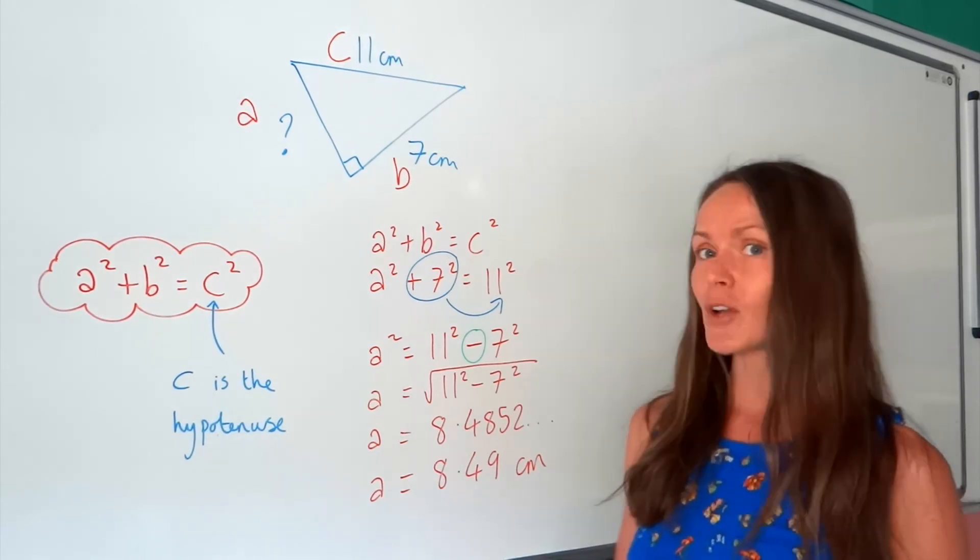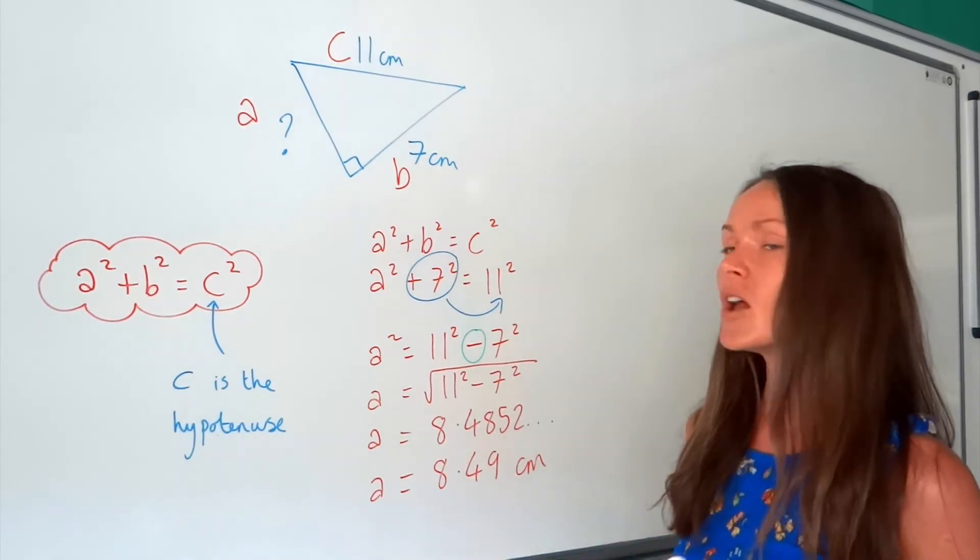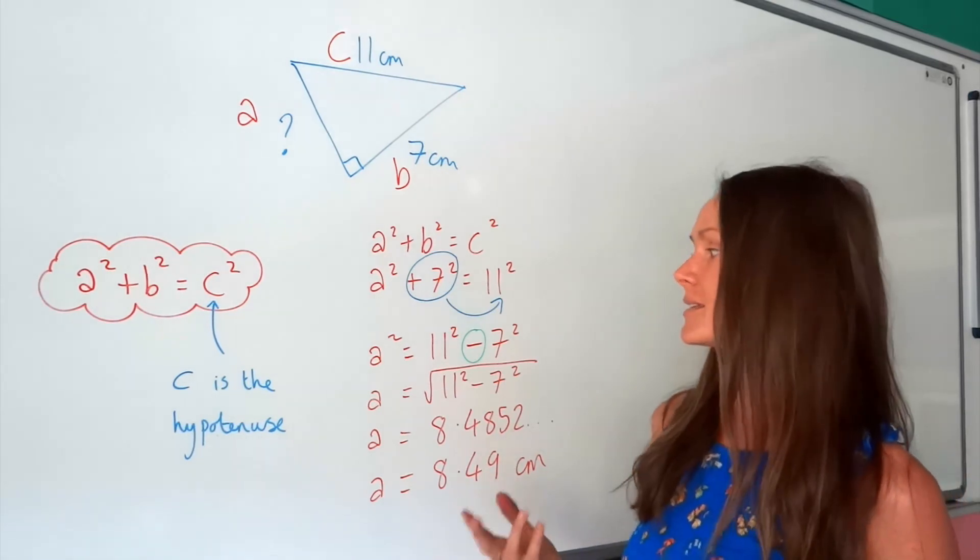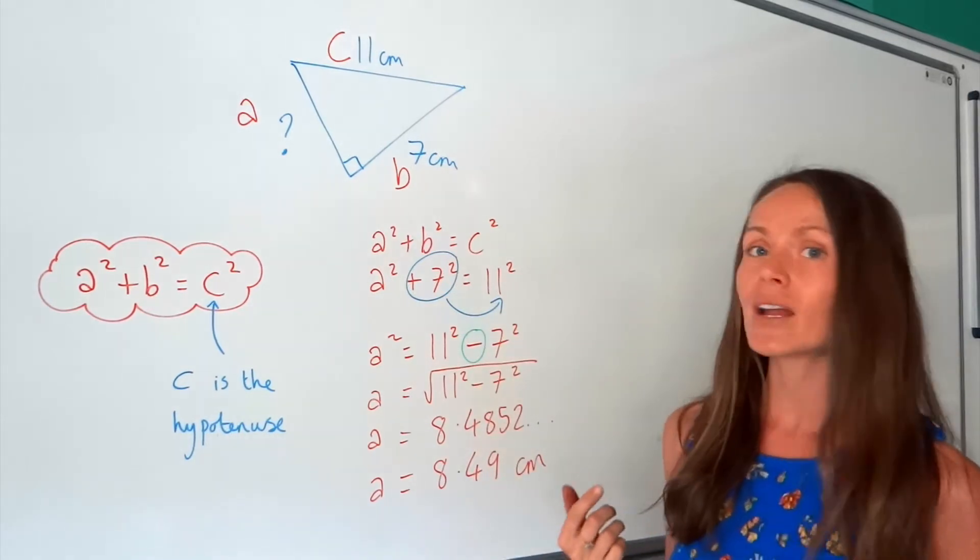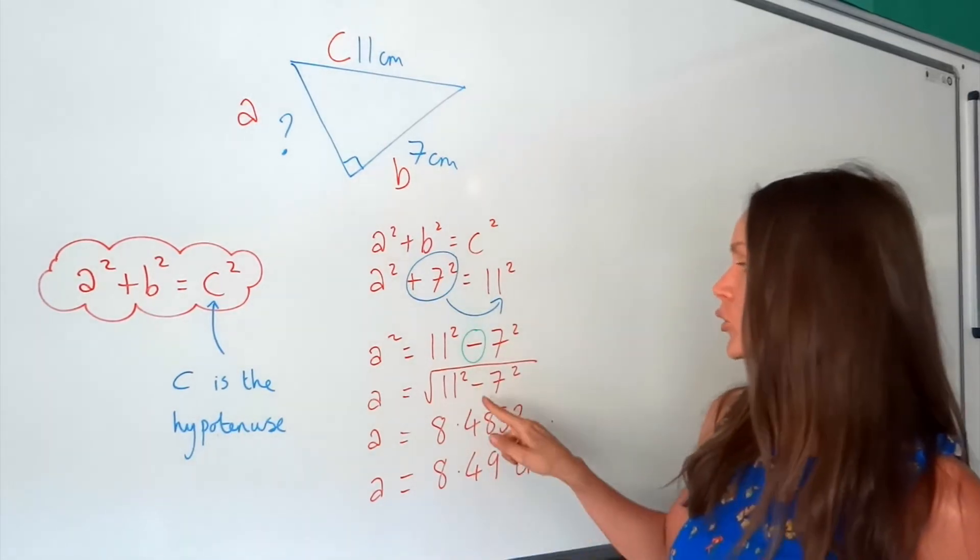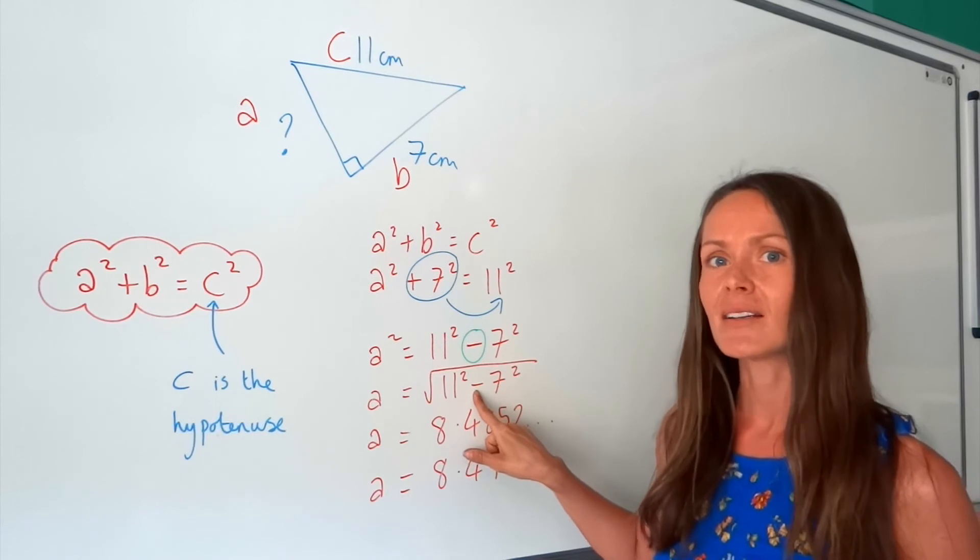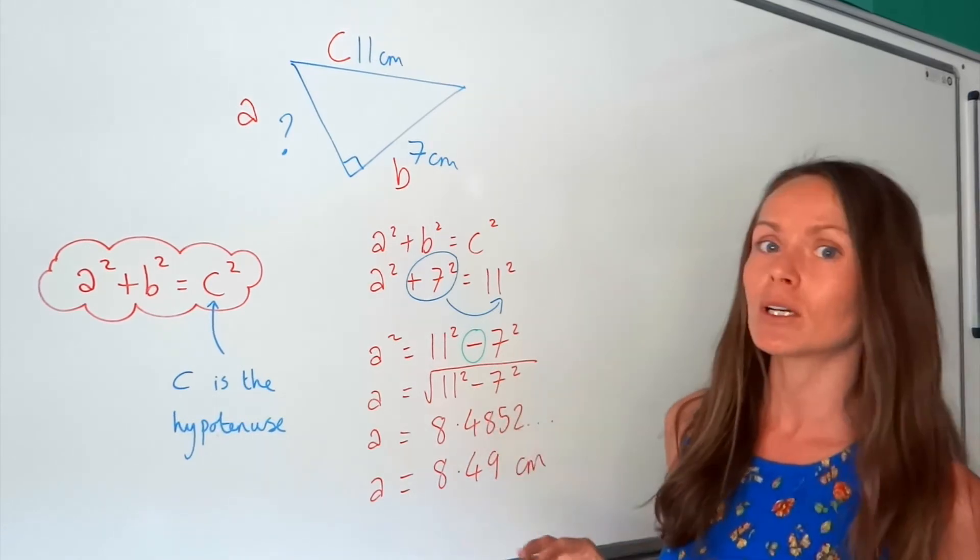So hopefully you've noticed with those examples, in the first one, when you're finding C, you just added and square rooted. But whenever you're finding the shorter sides, A and B, you're always minusing. So as soon as you can see you're finding one of the shorter sides, remember, in your calculation, you should be subtracting.